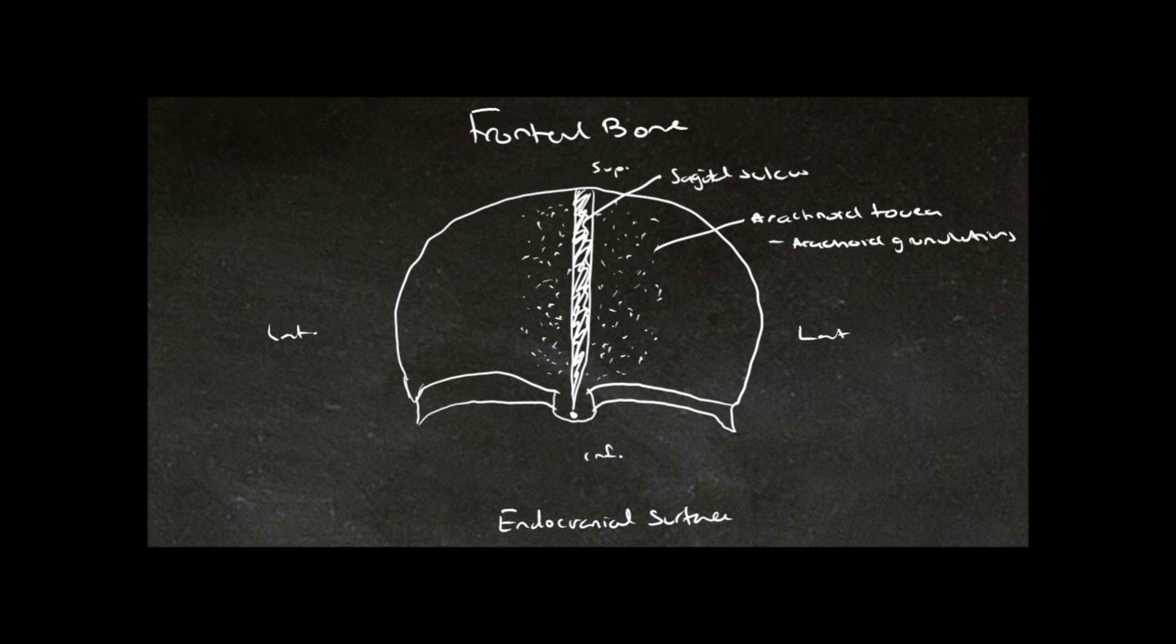Down here we have the frontal crest, and this is for the attachment of the falx cerebri, which is a fold of dura mater which separates the left and right cerebral hemispheres and lies in the sagittal fissure.